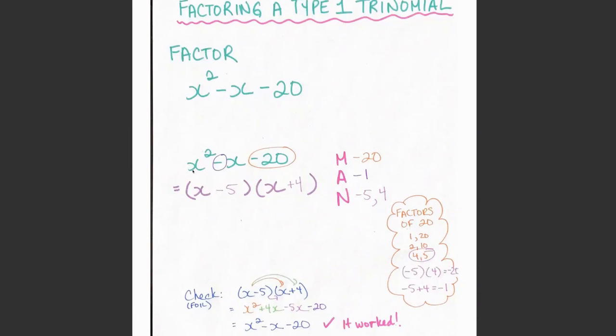Now, the tricky part is trying to figure out what numbers will give us this -1 in front of the x in the middle, and this -20 when I multiply my two numbers together at the end.